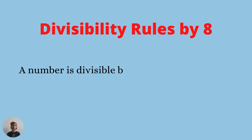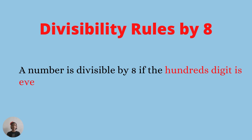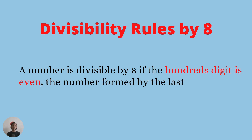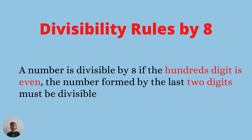Divisibility rule of eight: a number is divisible by eight if the hundreds place digit is even and the number formed by its last two digits is divisible by eight. Example: six hundred and twenty-four — it has the hundreds digit even and the last two digits formed is divisible by eight.